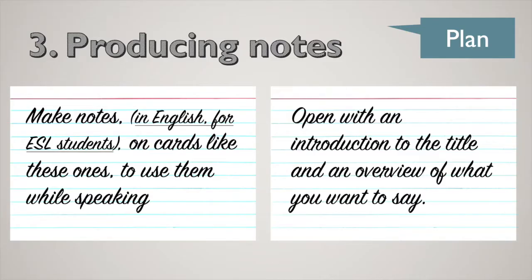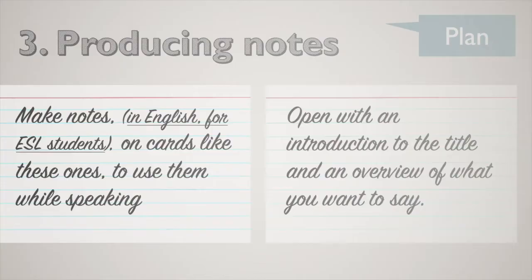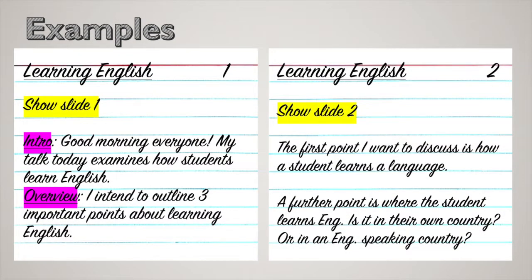Open with an introduction to the title and an overview of what you want to say. For example, in a presentation about learning English, on slide one I would introduce myself by saying: 'Good morning everyone. My talk today examines how students learn English.' I would also give an overview, saying: 'I intend to outline three important points about learning English.' Moving on to slide two, I would say: 'The first point I want to discuss is how a student learns a language,' then cover a further point about where the student learns English — whether in their own country or in an English-speaking country.